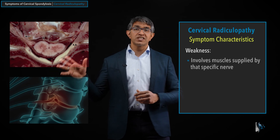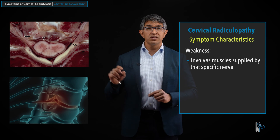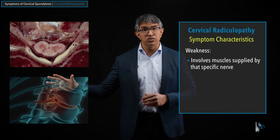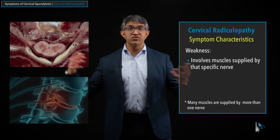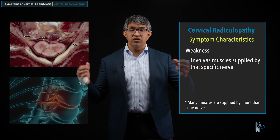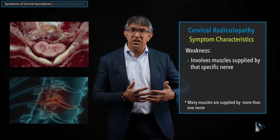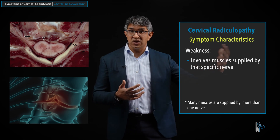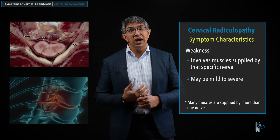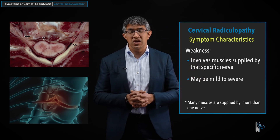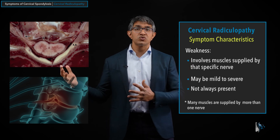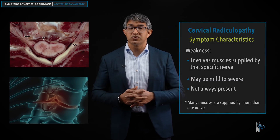Weakness will similarly affect just the muscles supplied by that nerve. Think of a nerve as a conductor sending signals from the brain down to specific muscle groups. If not all signals are getting through, whatever muscles that nerve goes to will exhibit some weakness. Interestingly, many muscles receive innervation from multiple nerves, so if one shuts down they'll have some weakness but may still move. The degree of weakness can be mild to severe, and weakness need not always be present.